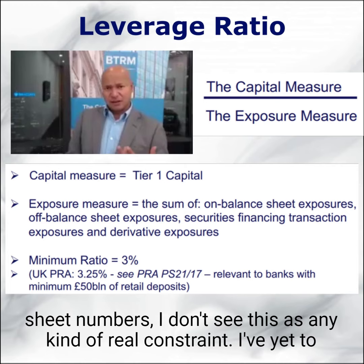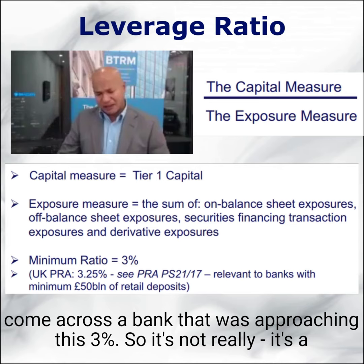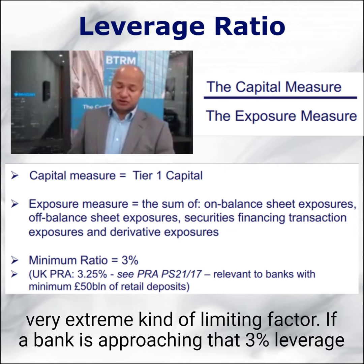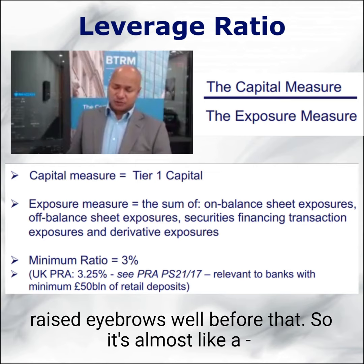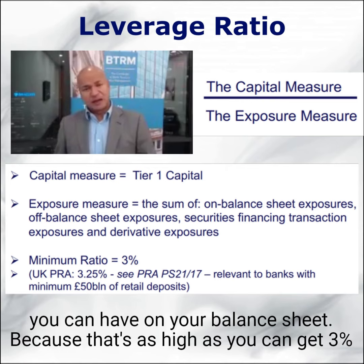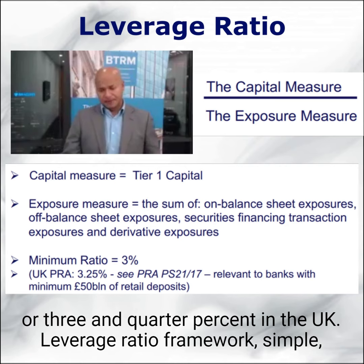From what I observe, banks around the world that are familiar with their balance sheet numbers — I don't see this as any kind of constraint. I have yet to come across a bank that was approaching this 3%. So it's a very extreme limiting factor. If a bank is approaching that 3% leverage ratio, then obviously it's very highly levered and its regulator would have raised eyebrows well before that. Think of it as the upper bound of credit risk exposure you can have on your balance sheet — as high as 3% or 3.25% in the UK.